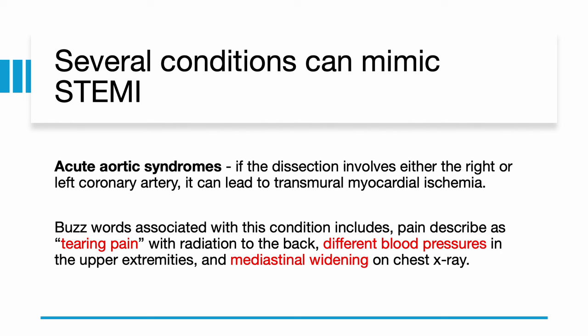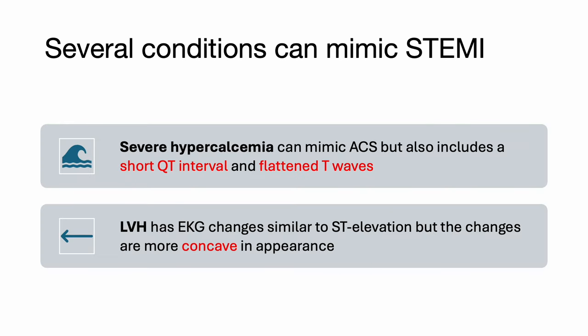If the dissection involves either the right or left coronary artery, it can lead to transmural myocardial ischemia. The buzzwords to remember include pain described as tearing pain with radiation to the back, different blood pressures in the upper extremities, and mediastinal widening on chest x-ray. Severe hypercalcemia can mimic ACS, but also includes short QT interval and flat T waves. Left ventricular hypertrophy also has EKG changes similar to ST elevation, but the changes are more concave in appearance.